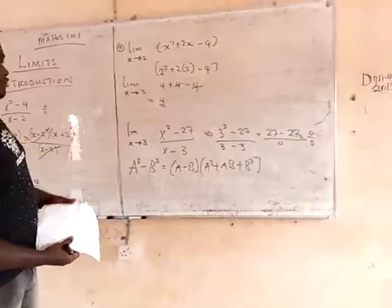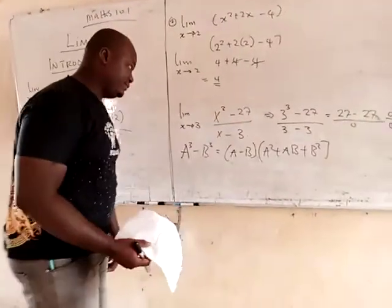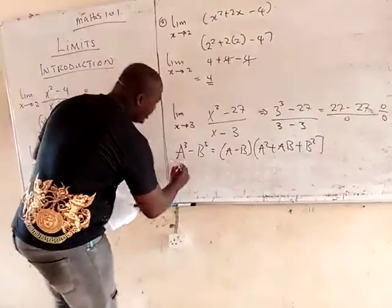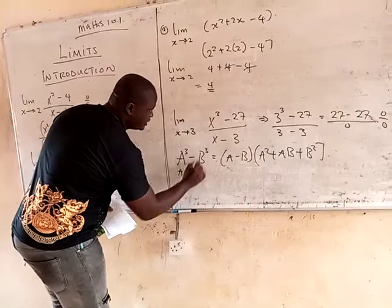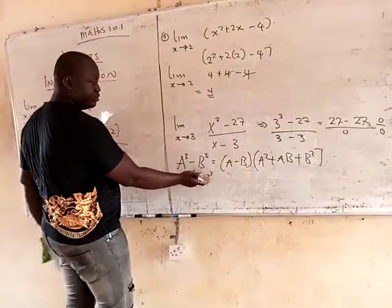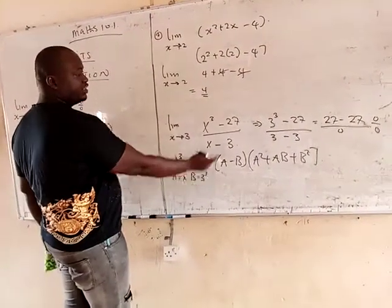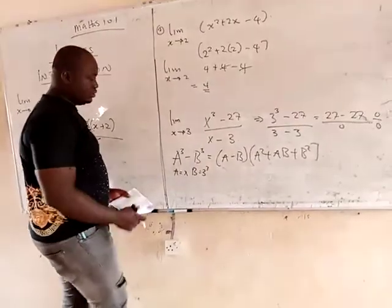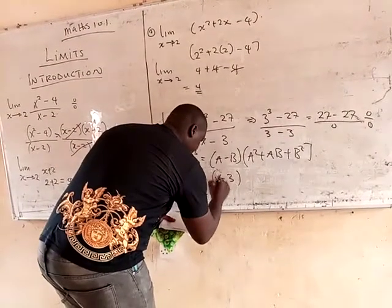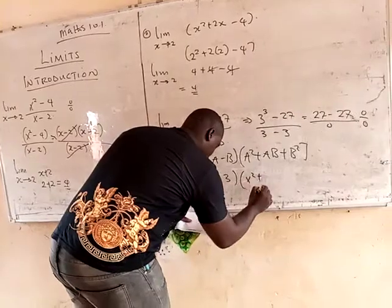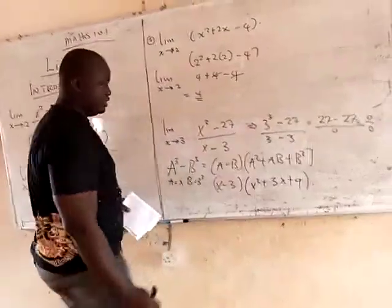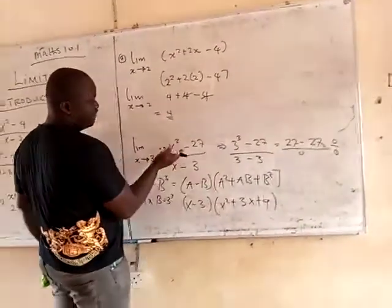That's the formula I'm going to use to factorize this. From this question, you can see that our a is x, and my b is 3, because 3 to the power of 3 will give us 27. So, putting it in, it's going to give me x minus 3, all into x squared plus 3x plus 9. I've already succeeded in factorizing this.